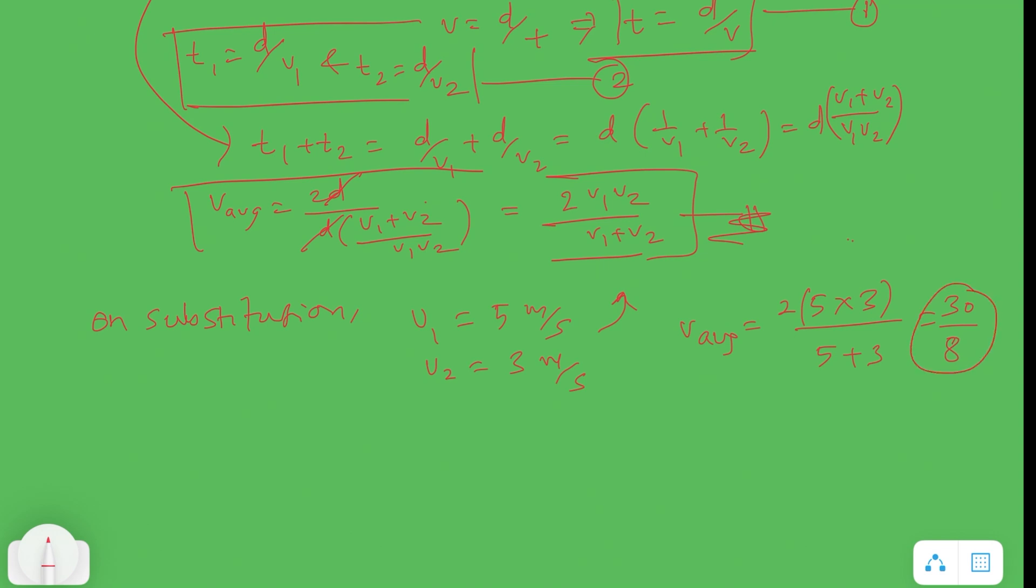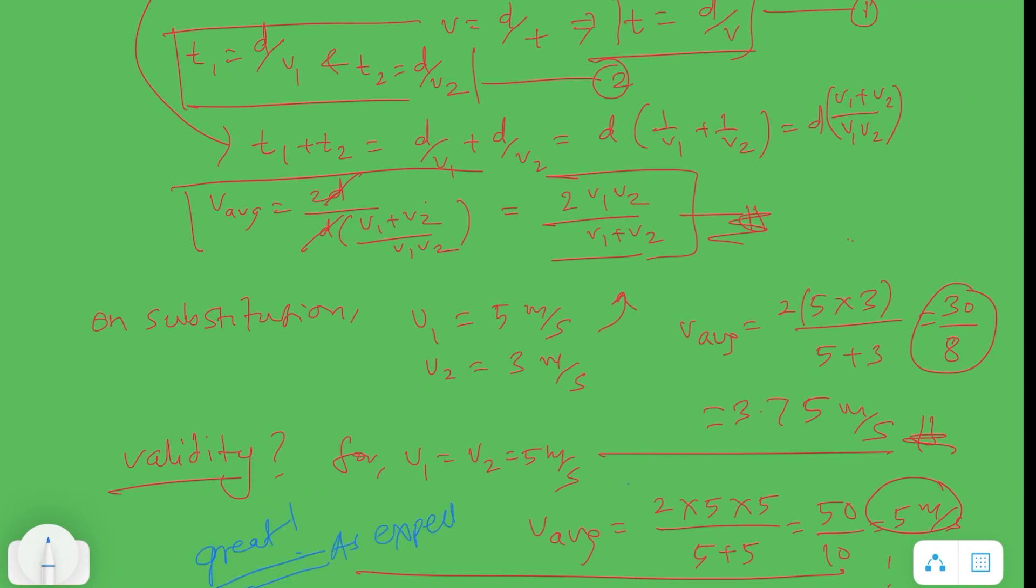However, you can double-check the validity of this equation for the V average by taking the same values 3 meters per second or 5 meters per second. Example, special case. When both ways V equals to 5, then V average equals to 2 times 5 times 5 divided by 5 plus 5, which equals to 5 meters per second. Great! The average is the same as each way. That makes sense, right?